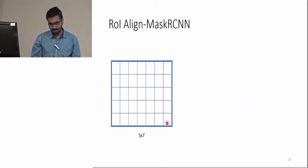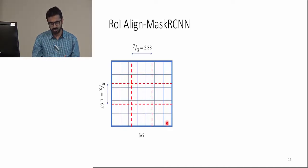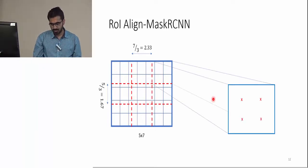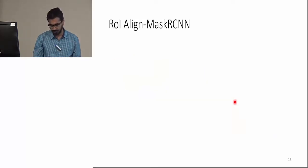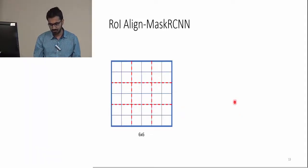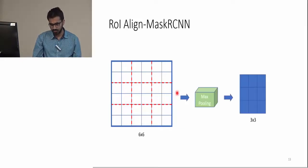ROI align tries to fix that problem. ROI align divides a feature map into 3x3 floating segments. In our example, we have 2.33 by 1.67 cells in each segment. Then in each one of these segments, it samples four points and the value for these points is computed by bilinear interpolation. After this interpolation step, we end up with a 6x6 feature map which is equivalent to the original 5x7 feature map. At this point, we can use standard max pooling to get the output feature map by max pooling each 2x2 block.